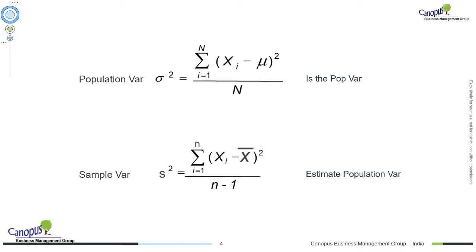In statistics, particularly for standard deviation and variance — and note that standard deviation is just the square root of variance, so the formulas are essentially the same — the population variance has N in the denominator, where capital N stands for the entire population. And the mu on the numerator is nothing but the population mean or the population average.